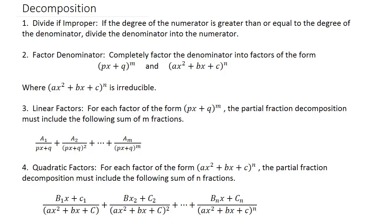Even if you do have that, you want to try to factor the denominators completely. You're either going to have linear or quadratic factors. For the quadratic ax² + bx + c to the n, you have to make sure that this cannot be factored anymore — that's what irreducible means: it won't factor anymore.